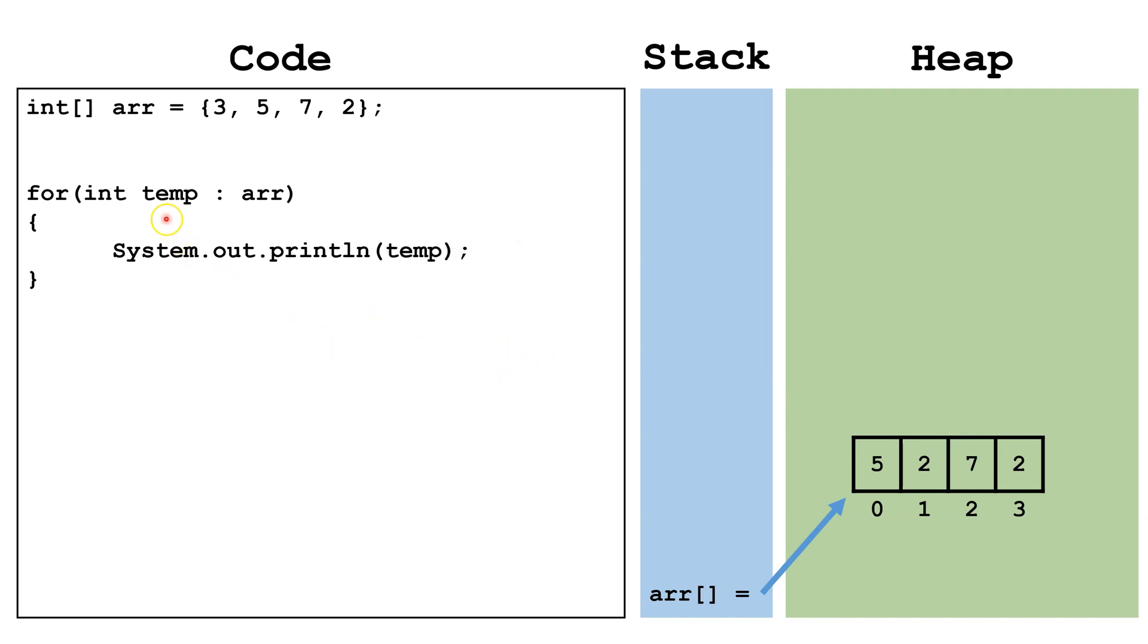So whenever you're using a for each loop remember you don't have to deal with indexes. You just pull out the values into your temp variable. So those are the most common ways you can get an array index out of bounds exception and how to fix them.